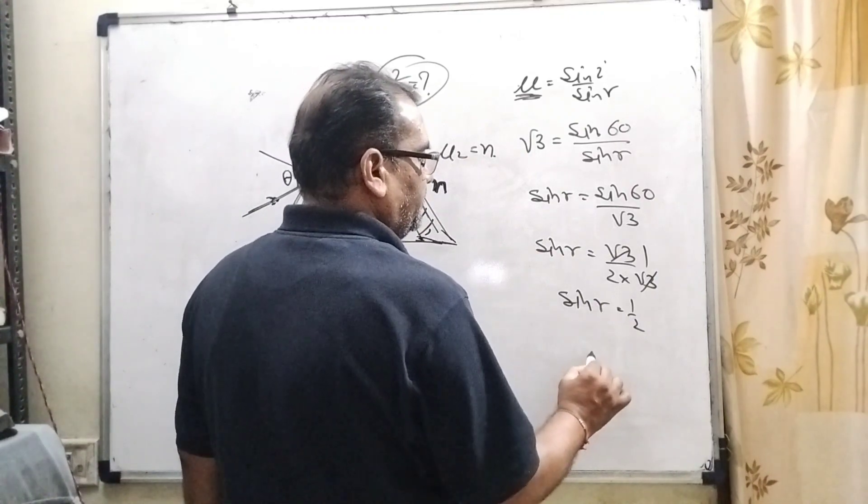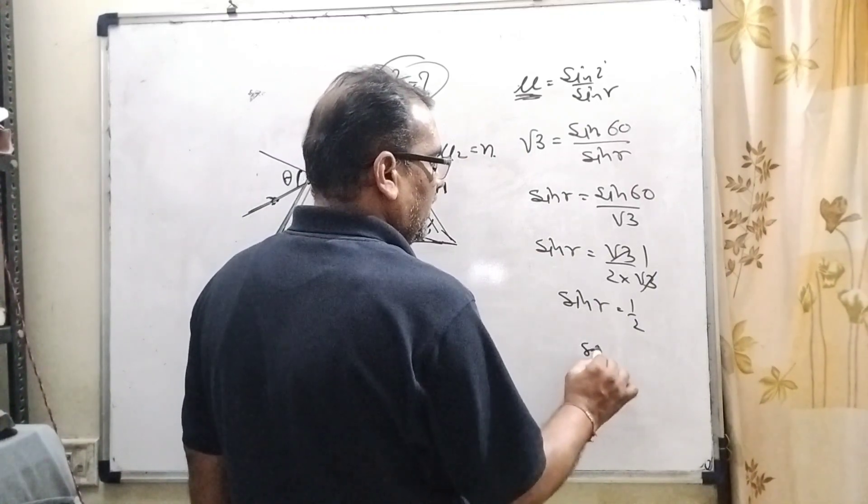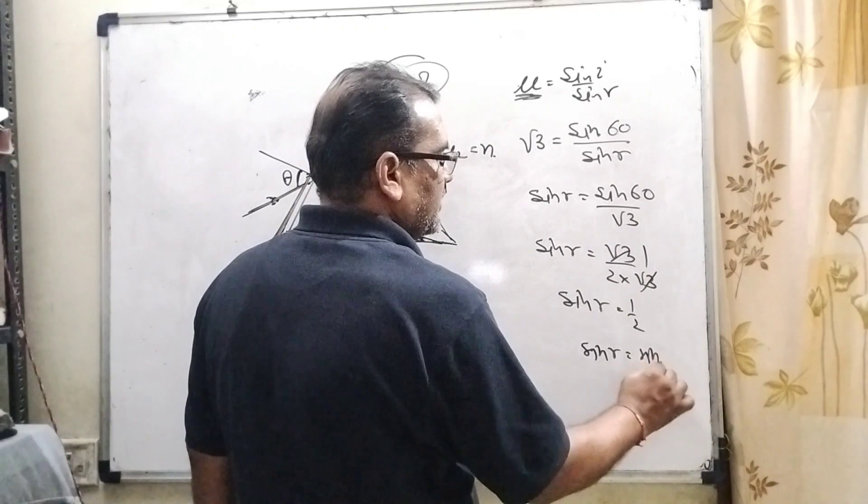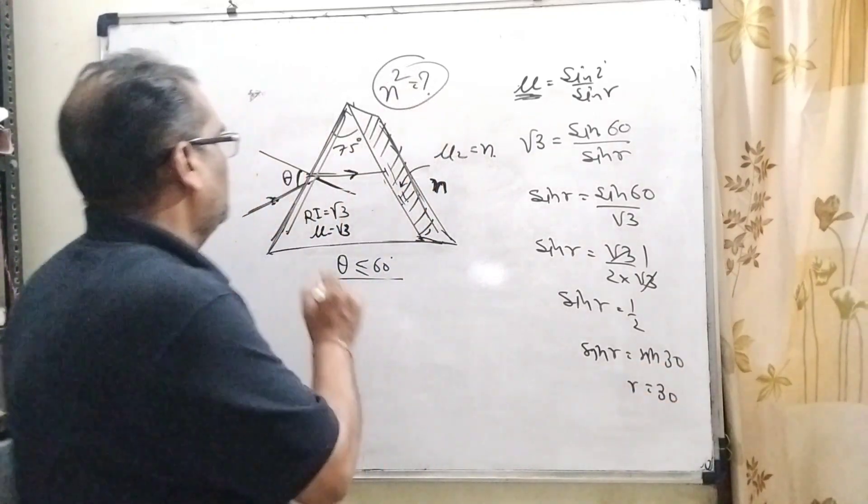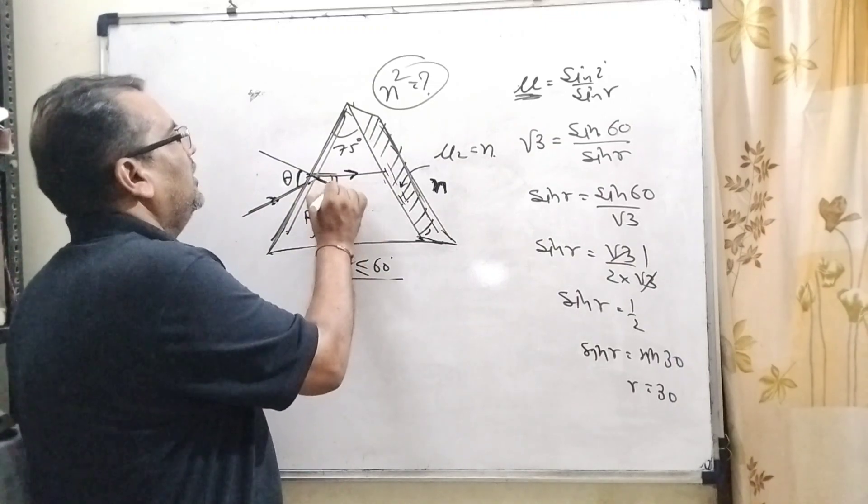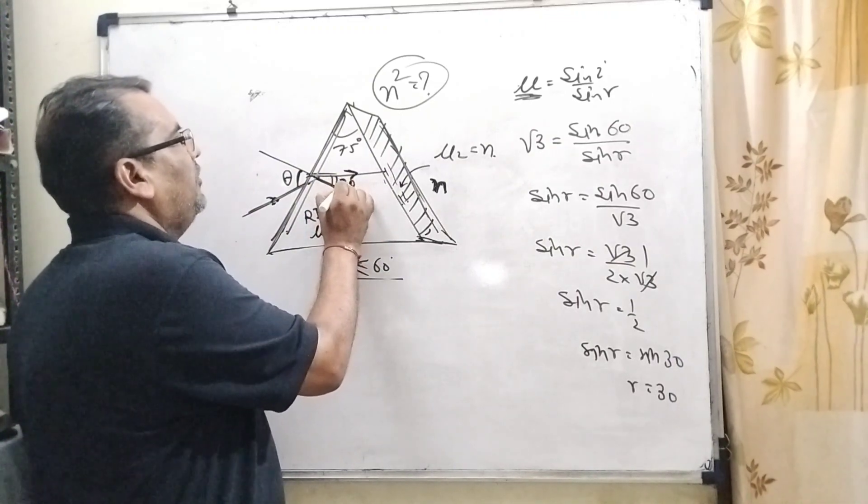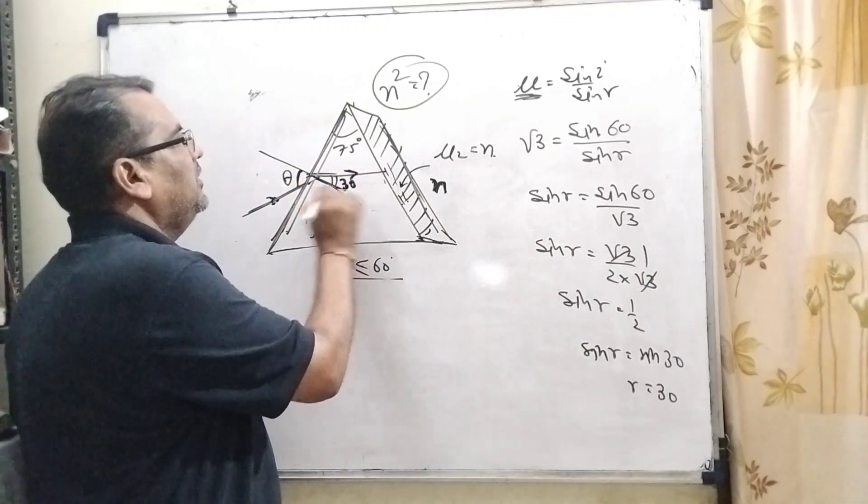Then r, we know very well that sin r equals 1 by 2, which is the value of sin 30. So r equals 30. So this angle of first refraction r1 is 30 degrees.